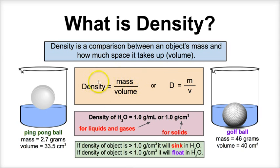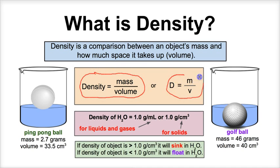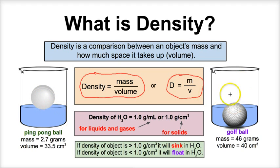To get the density of an object it's quite simple — we take the mass of the object and we divide it by the volume of that object. So let's suppose we have two objects: we have a ping pong ball in this beaker of water here, and we have a golf ball in this beaker of water here.